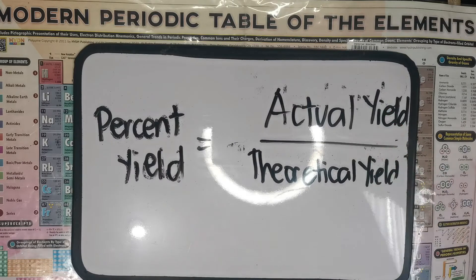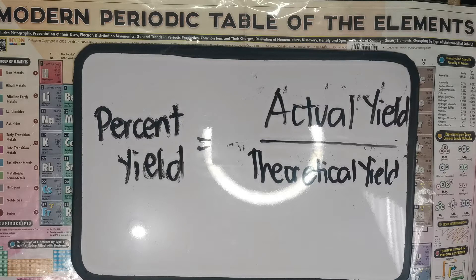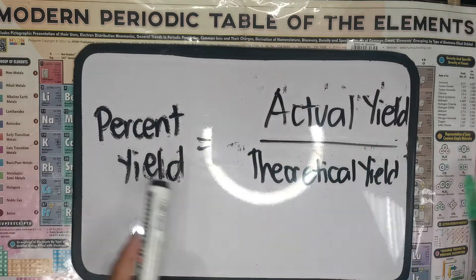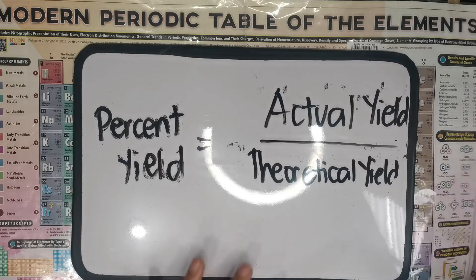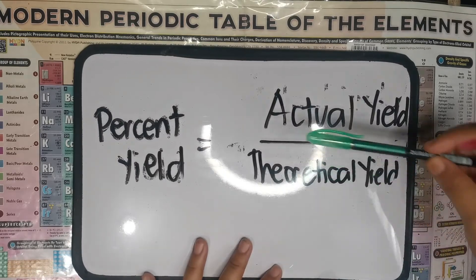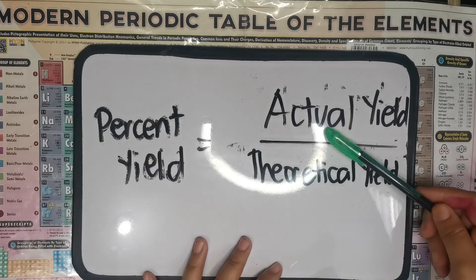So, what is the actual and theoretical yield? Theoretical yield is the maximum amount that the product can be or could be formed — ito yung pinaka-maximum na pwede niyang ma-form. While the actual yield, from the word actual, is the amount of product that is actually formed when the reaction is carried out in the laboratory — yung pinaka-talagang nakuha sa experiment sa laboratory.